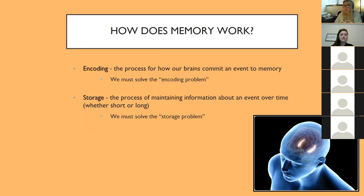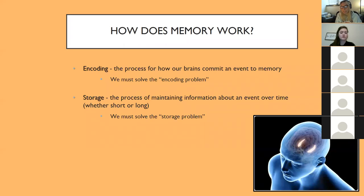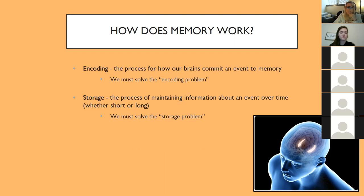So how does memory work? First, we have the process of encoding — this is how our brains commit an event to memory. Your book refers to it as solving the encoding problem. Then we have storage, which is the process of maintaining that information over some length of time, whether it's a short amount of time or a long amount of time in the case of long-term memory. We're going to move from more immediate memory that only lasts a few seconds to long-term memory that you store over a long period of time.